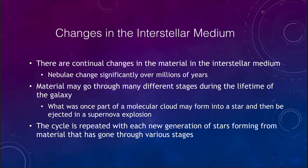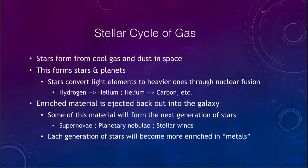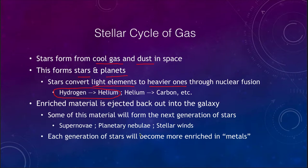The stellar cycle shows that stars form from the cool gas and dust in space, which forms stars and planets. What stars do is convert light elements into heavier elements. For example, hydrogen fusion converts hydrogen into helium — that's what our Sun is doing right now. More massive stars could be converting helium into carbon, which our Sun will do towards the end of its life.